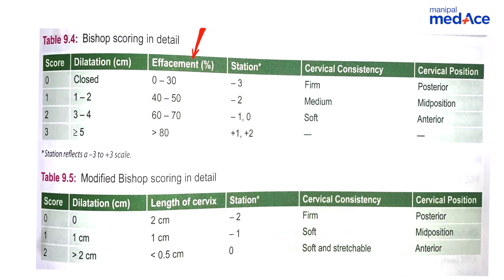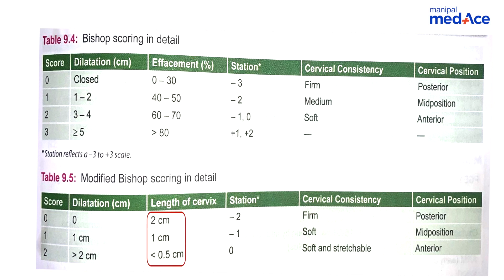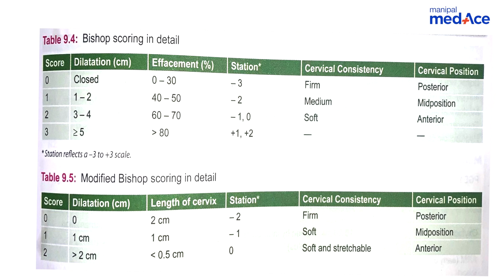Effacement, because it is subjective, has been replaced by length of the cervix. So 2 cm, 1 cm, and less than 0.5 cm are the values in modified Bishop's score. In standard Bishop's score, effacement is 30%, 50%, 70% — simply add 20 each time — and more than 80% is score 3.